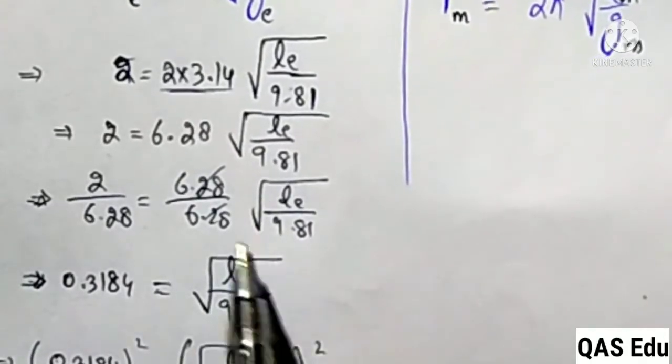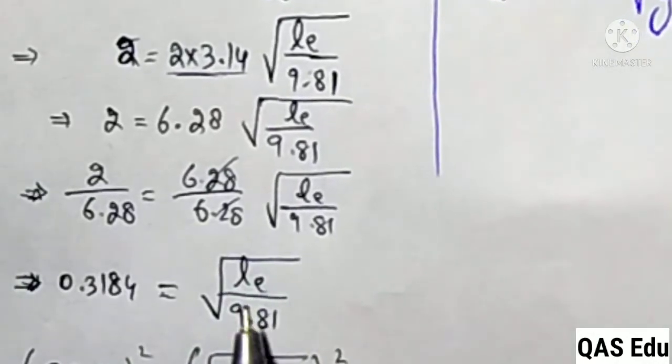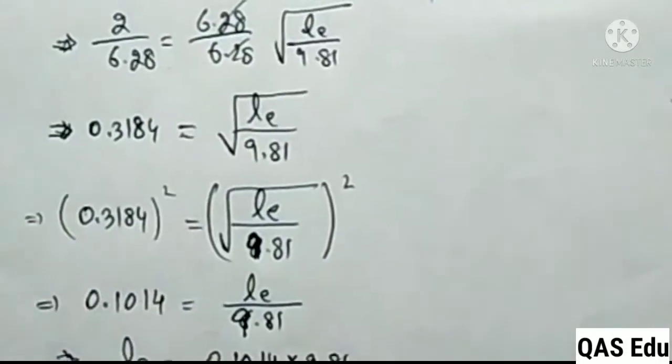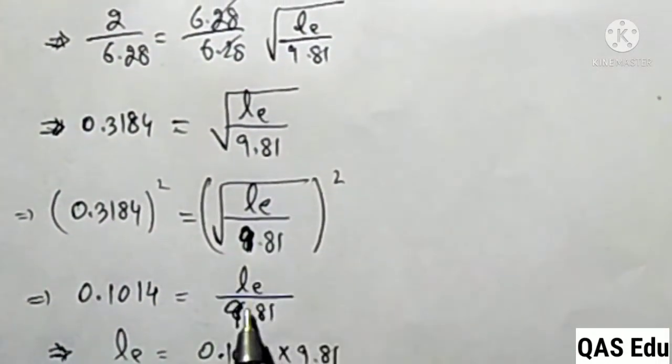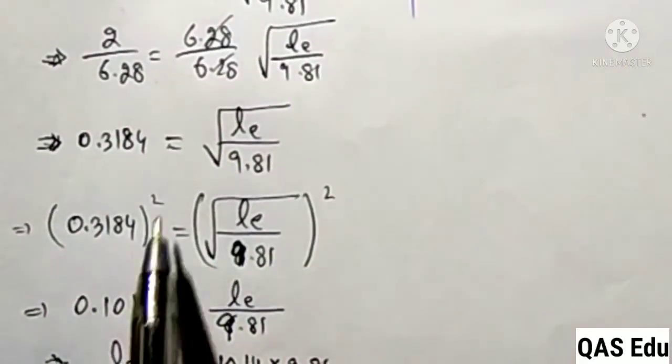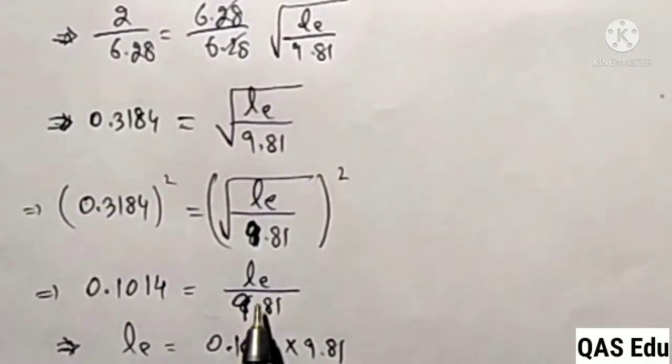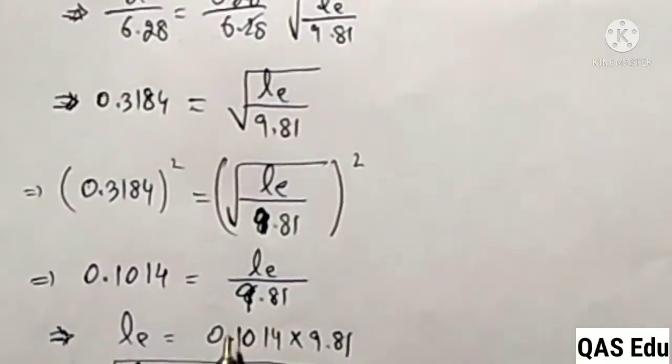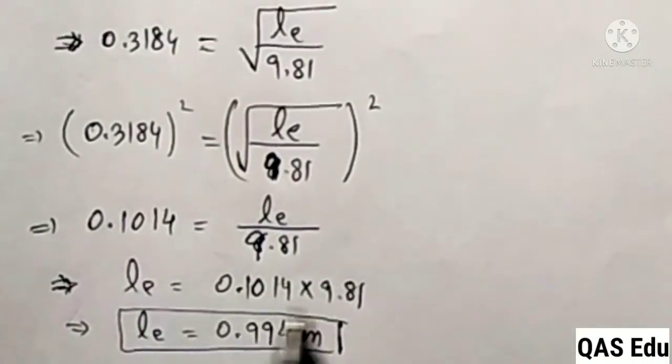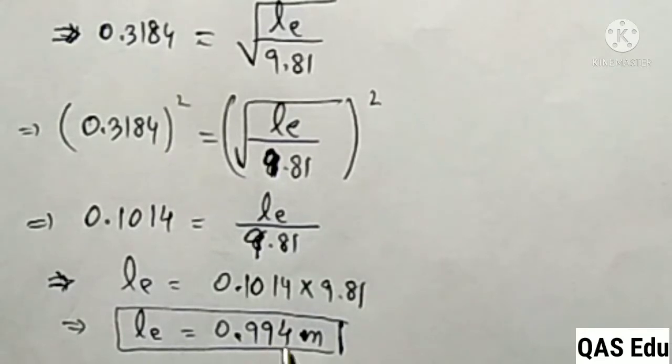Taking the square of both sides: (0.3184)² = Le/9.81. So 0.1014 = Le/9.81. Therefore Le = 0.1014 × 9.81. The length on Earth Le = 0.994 meters.